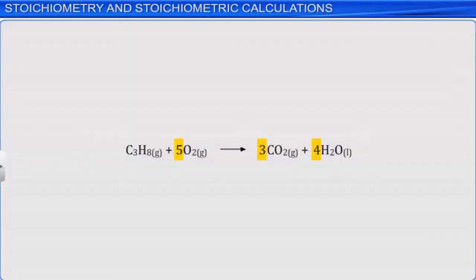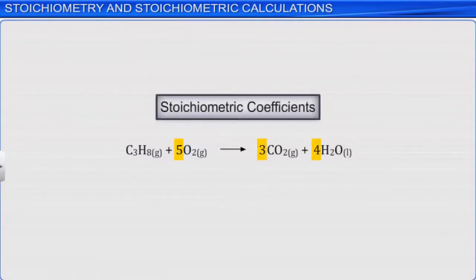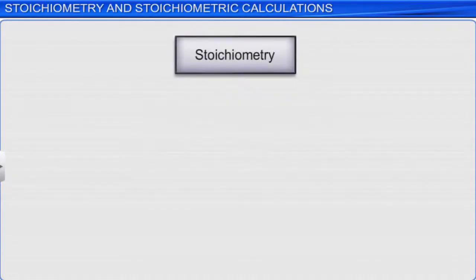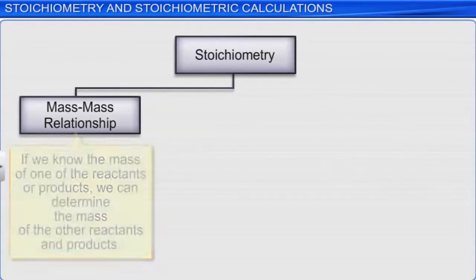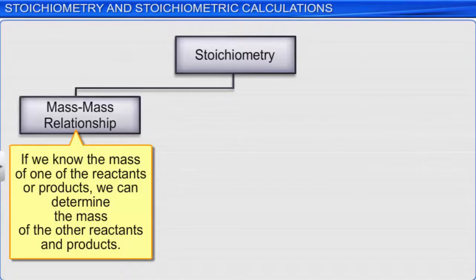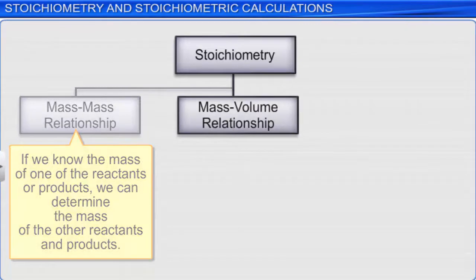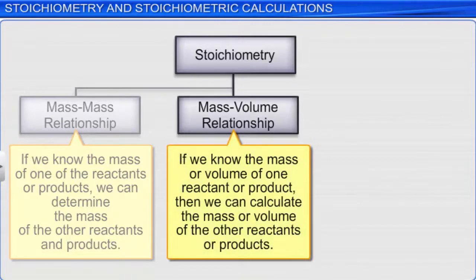The calculation of quantitative relationships of the reactants and products in a balanced chemical reaction is known as stoichiometry. The coefficients in a balanced chemical equation are called stoichiometric coefficients. Stoichiometric calculations help understand the mass-to-mass relationship — meaning if we know the mass of one reactant or product, we can determine the mass of the others. Similarly, it helps understand the mass-and-volume relationship, so if we know the mass or volume of one reactant or product, we can calculate the mass or volume of the others.